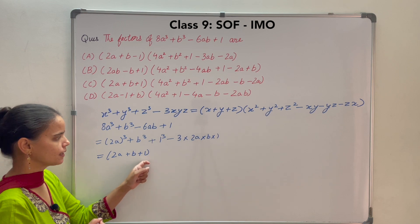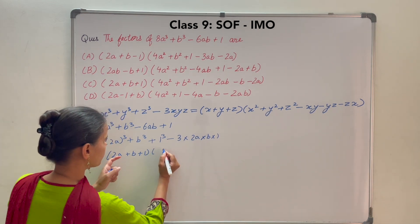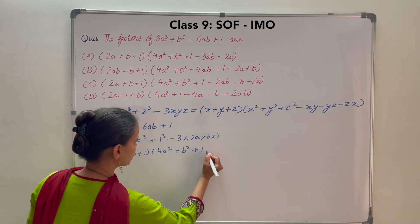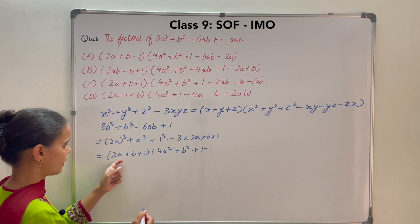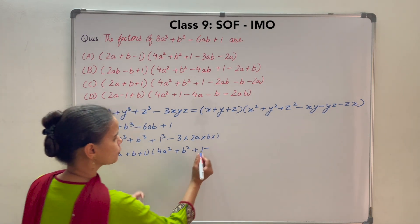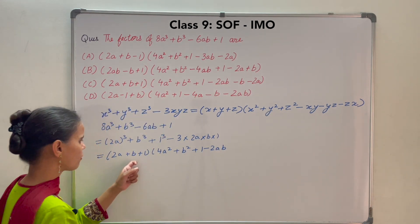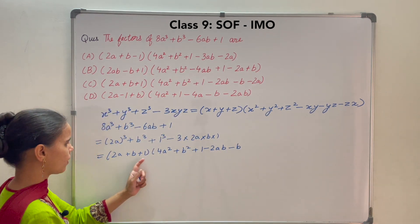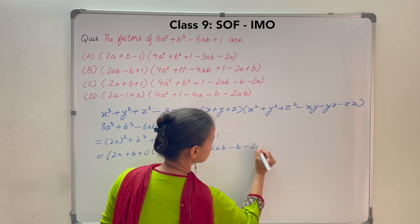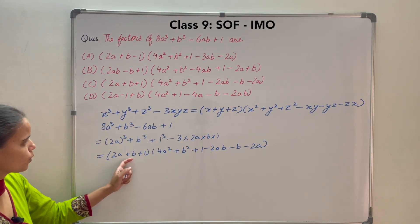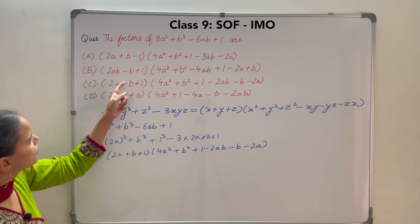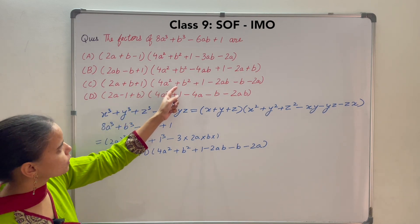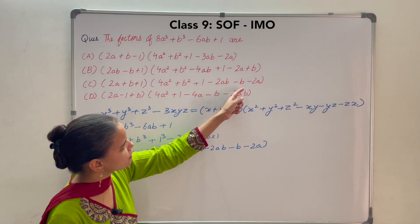With x as 2a, y as b, and z as 1, the second factor is 2a whole square plus b square plus 1 squared, which is 4a square plus b square plus 1, minus xy which is 2ab, minus yz which is b, minus zx which is 2a. So the complete factorization is 2a plus b plus 1 into 4a square plus b square plus 1 minus 2ab minus b minus 2a.